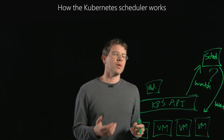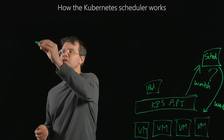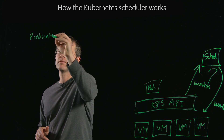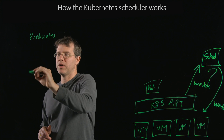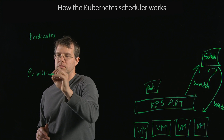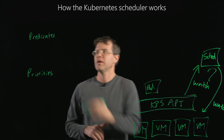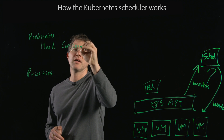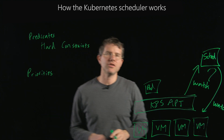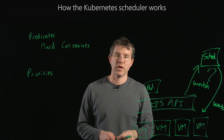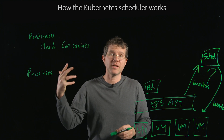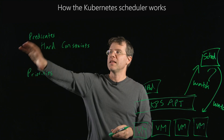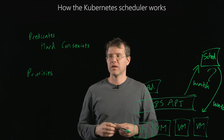What the scheduler is thinking about when it makes a scheduling decision is a mixture of two things: there are predicates and there are priorities. Predicates are hard constraints — things that cannot be violated. It might be something like: I need to run on a machine with at least four gigabytes of memory. If a machine doesn't have four gigabytes of memory, that container cannot be scheduled there. They eliminate machines entirely from consideration.